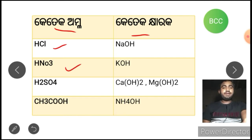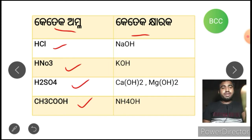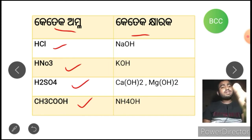HNO3 is nitric acid. H2SO4 is sulfuric acid. CH3COOH is acetic acid. So this is hydrochloric acid, nitric acid, sulfuric acid, and acetic acid.